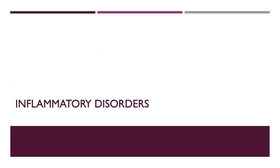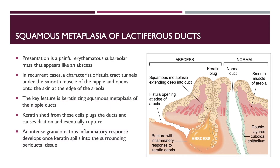Let's first start with the inflammatory disorders. The first is squamous metaplasia of the lactiferous ducts. In this condition, patients present with a painful erythematous subareolar mass that appears like an abscess. In recurrent cases, a characteristic fistula tract tunnels under the smooth muscle of the nipple and opens onto the skin at the edge of the areola, as you can see in the image to the right. The key feature is keratinizing squamous metaplasia of the nipple ducts.